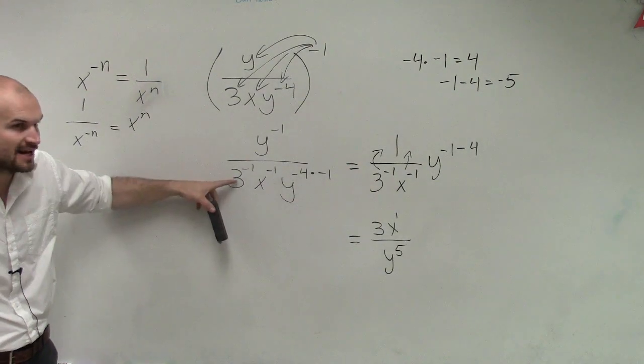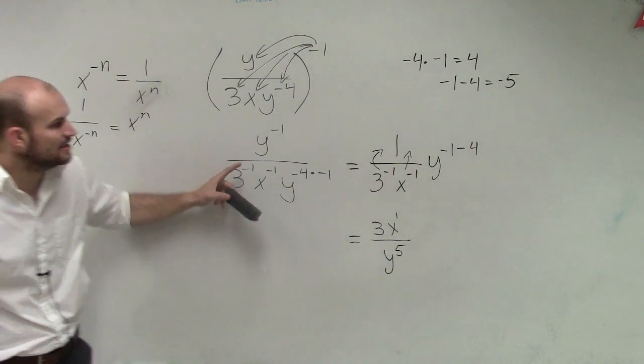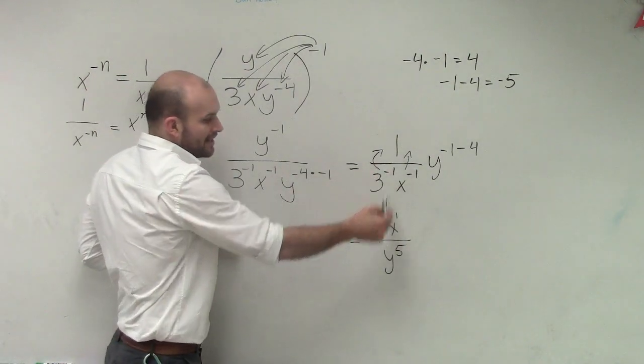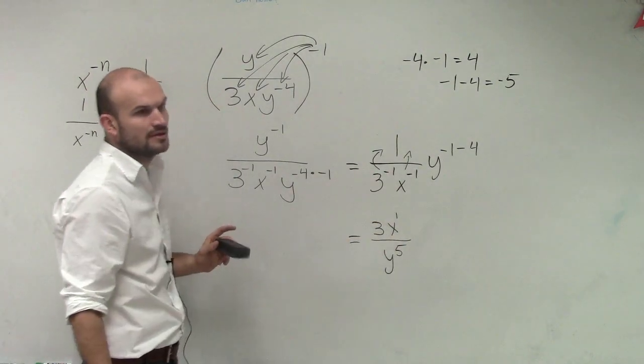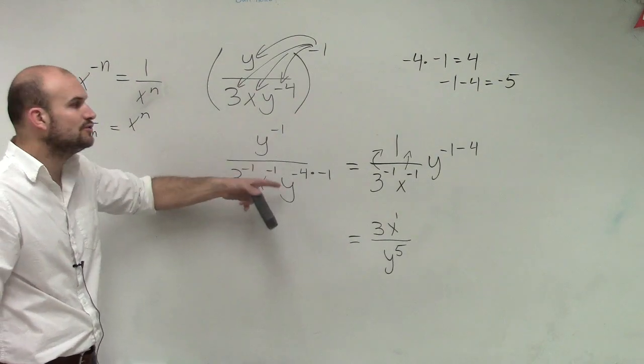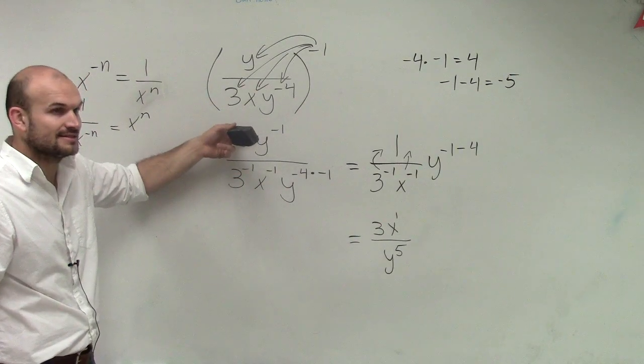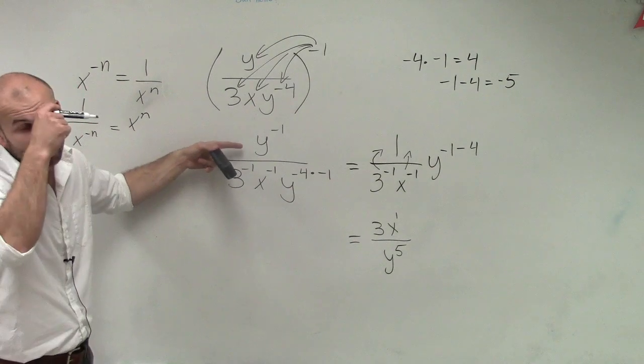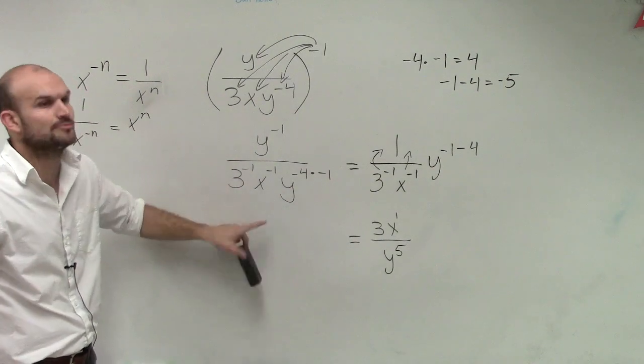When you distribute that negative 1, they're negative in the denominator. So that means you have to put them in the numerator to make them positive. So you made them positive, which is correct, but then you forgot that they're already in the denominator. You were thinking they're in the numerator, so to make them positive, you put them in the denominator.